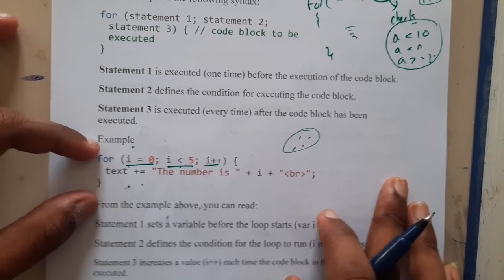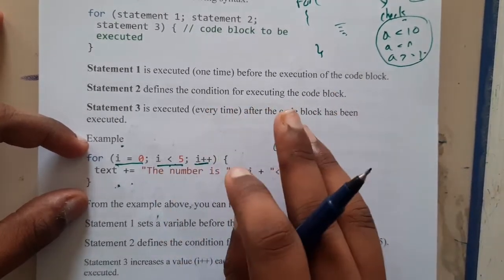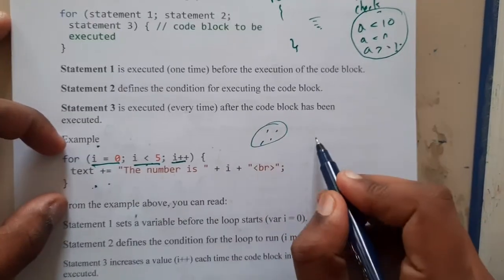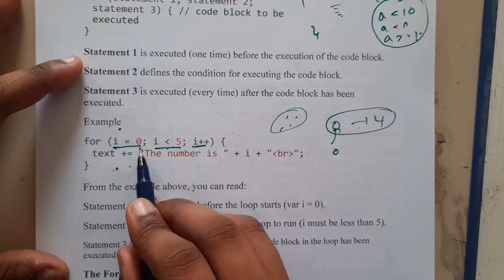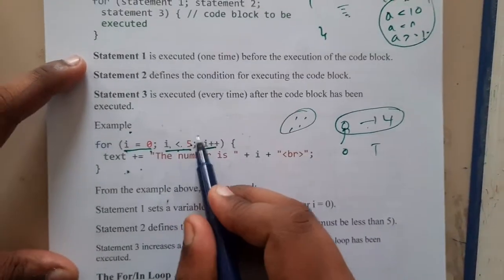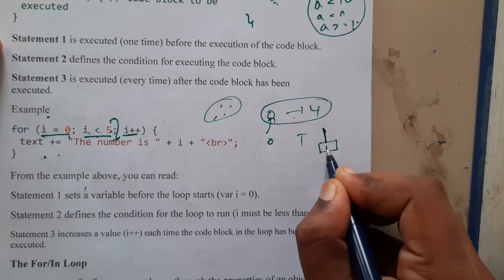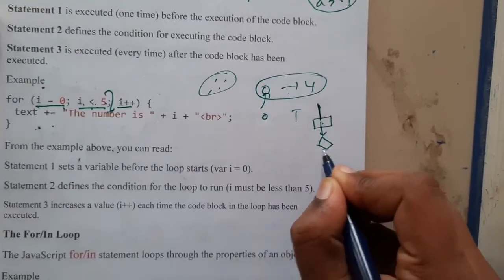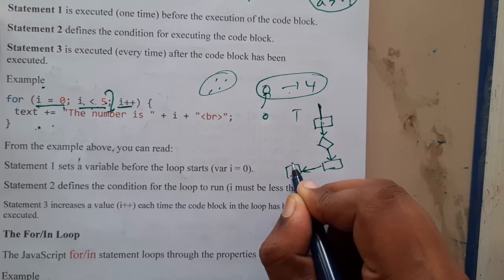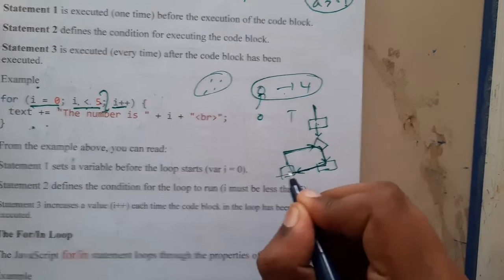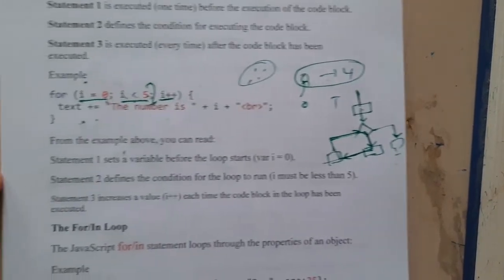Assume you want to print 'the number is 1', 'the number is 2', up to 'the number is 5'. You start from index zero and go to four. The initial value is zero — is zero less than five? True, so it enters the loop. The flowchart shows: initialize, check condition, if true execute statements, then increment, then check again. Once the condition is false, you exit the loop and continue with the rest of the statements.